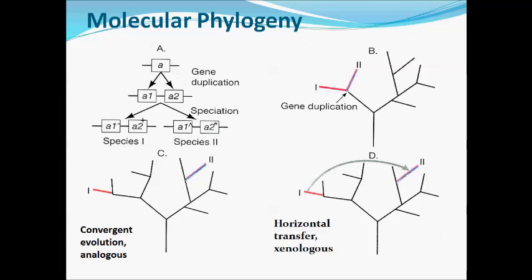Figure C shows convergent evolution, which applies to analogous genes. A gene in species 1 and a different gene in species 2 have converged on the same function by separate evolutionary paths. Such analogous genes resulting from convergent evolution include proteins that have a similar active site but a different backbone sequence. In figure D, horizontal gene transfer is shown — the concept of xenologous genes — where genes in species 1 and 2 are related by transfer of genetic material between species, even though the two species are separated by a long evolutionary distance.